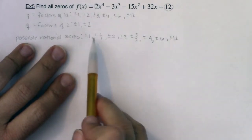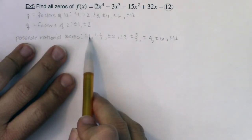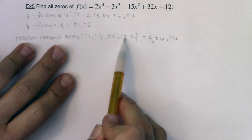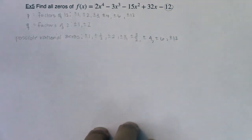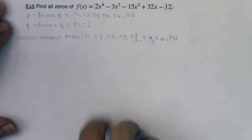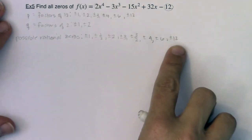How many possible zeros, possible rationals do we have? 2, 4, 6, 8, 10, 12, 14, 16. Yikes. So if I didn't have technology, I have a list of 16 possible rational zeros.